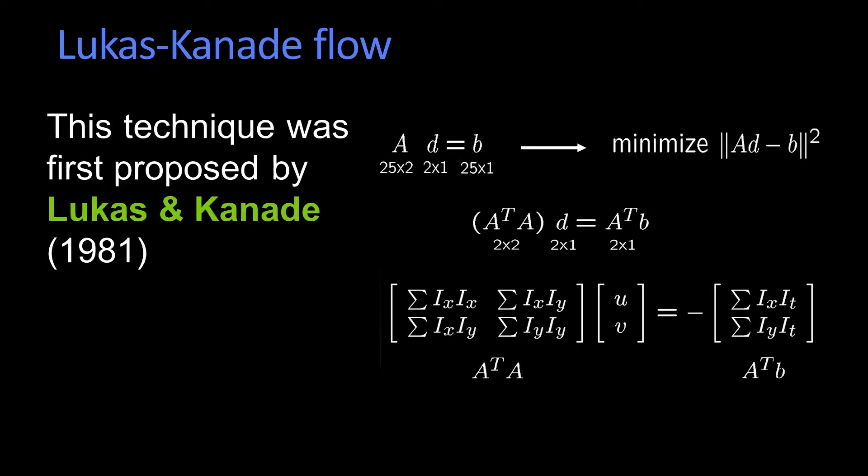And we mentioned how this method of recovering how something moved was first proposed by Lucas and Canadi in 1981. But critical to the whole derivation was the idea that we use this Taylor series expansion. That is, that we could approximate how something would move, or how much the intensity would change, by essentially fitting a planar ramp. That's the first order derivative approximation. Fitting a planar ramp to a point, and then as the point would move, the intensity would change according to the slope on that ramp.